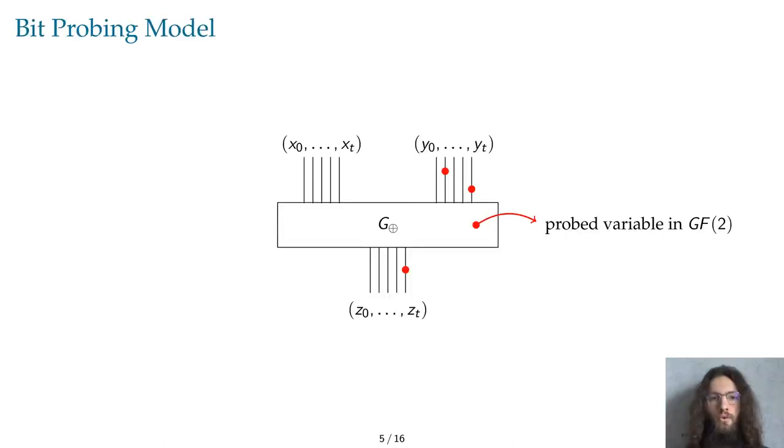In the first model we chose, the bit-probing model, the adversary is allowed to place a certain number T of probes inside the circuit, meaning that he has access to the values of T chosen variables inside a masked boolean circuit, possibly variables that are located inside gadgets.